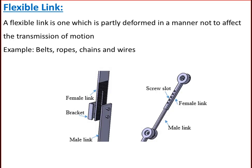Next is a flexible link. A flexible link is one which is partly deformed in a manner not to affect the transmission of motion. For example, belts, ropes, chains, and wires are flexible links and transmit tensile forces only.